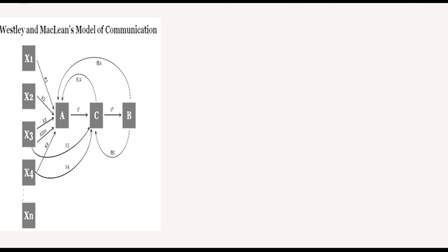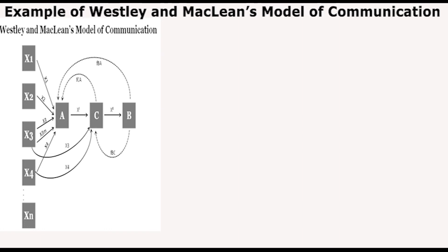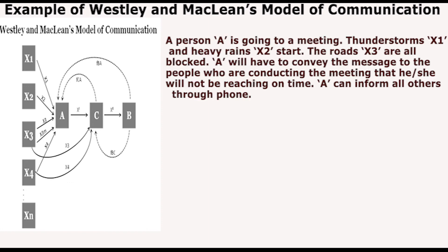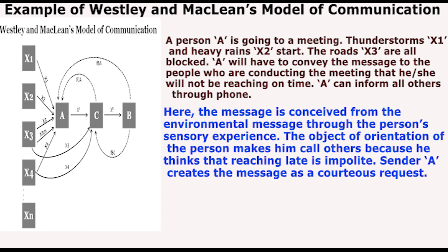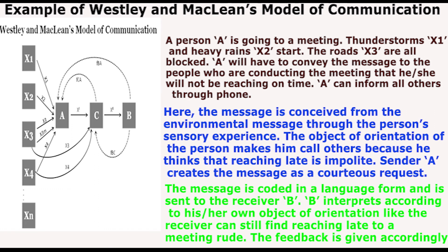Now we will discuss an example to explain Wesley and McLean's model of communication. A person A is going to a meeting when a thunderstorm (X1) and heavy rain (X2) start, and the roads (X3) are all blocked. A will have to convey the message to the people conducting the meeting that he or she will not be reaching on time, and can inform them through phone. The message is conceived from the environmental situation through the person's sensory experience. The object of orientation of the person makes him call others because he thinks that reaching late is impolite. Sender A creates the message as a courteous request, codes it in language form, and sends it to receiver B. B interprets it according to his own object of orientation — for example, the receiver can still find reaching late to a meeting rude — and gives feedback accordingly.